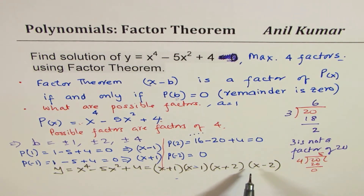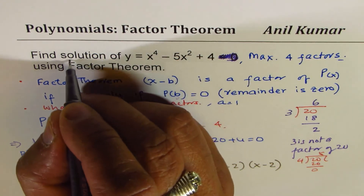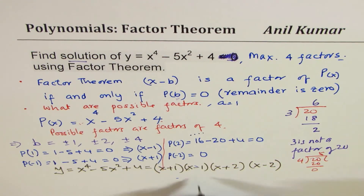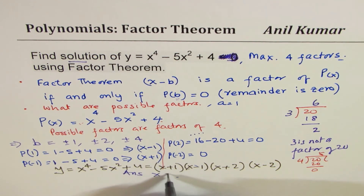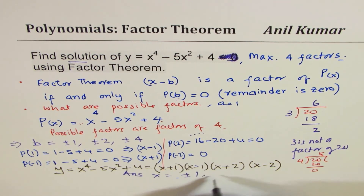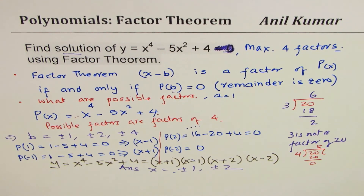To get to this result, we have just used the factor theorem, and that is what this question really means. When we find the solution, we are trying to find zeros. The answer is x equals plus or minus 1 and plus or minus 2. That is how it should be solved. I hope the concept is well taken.